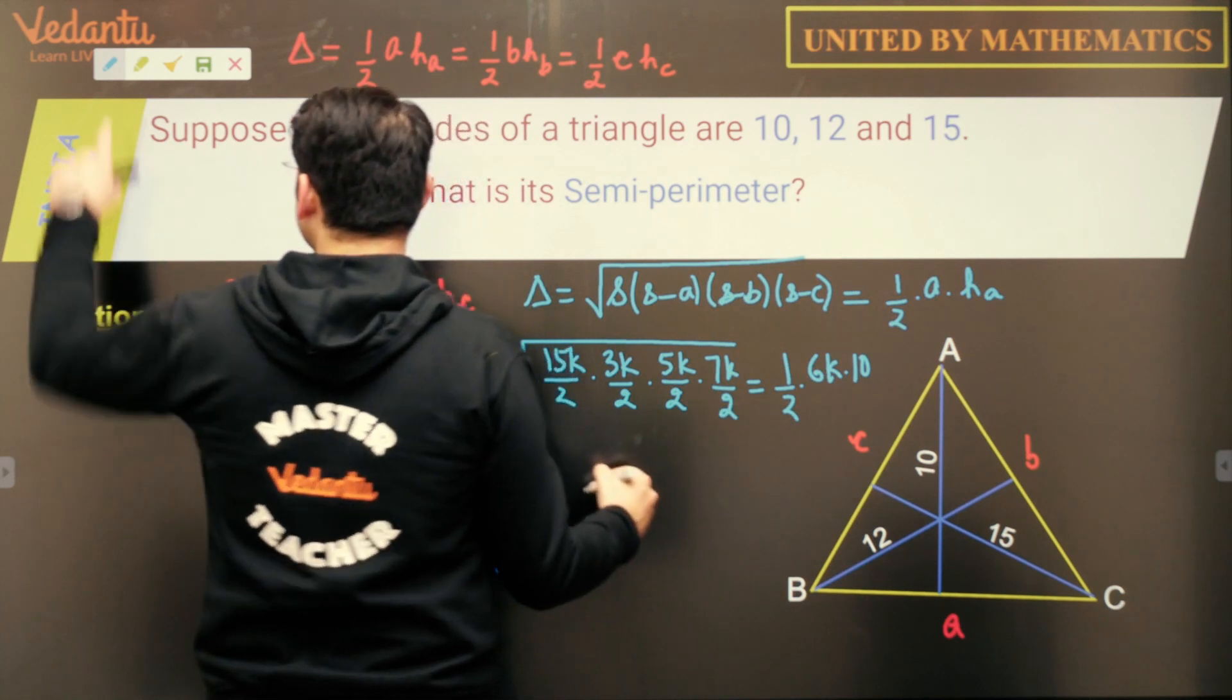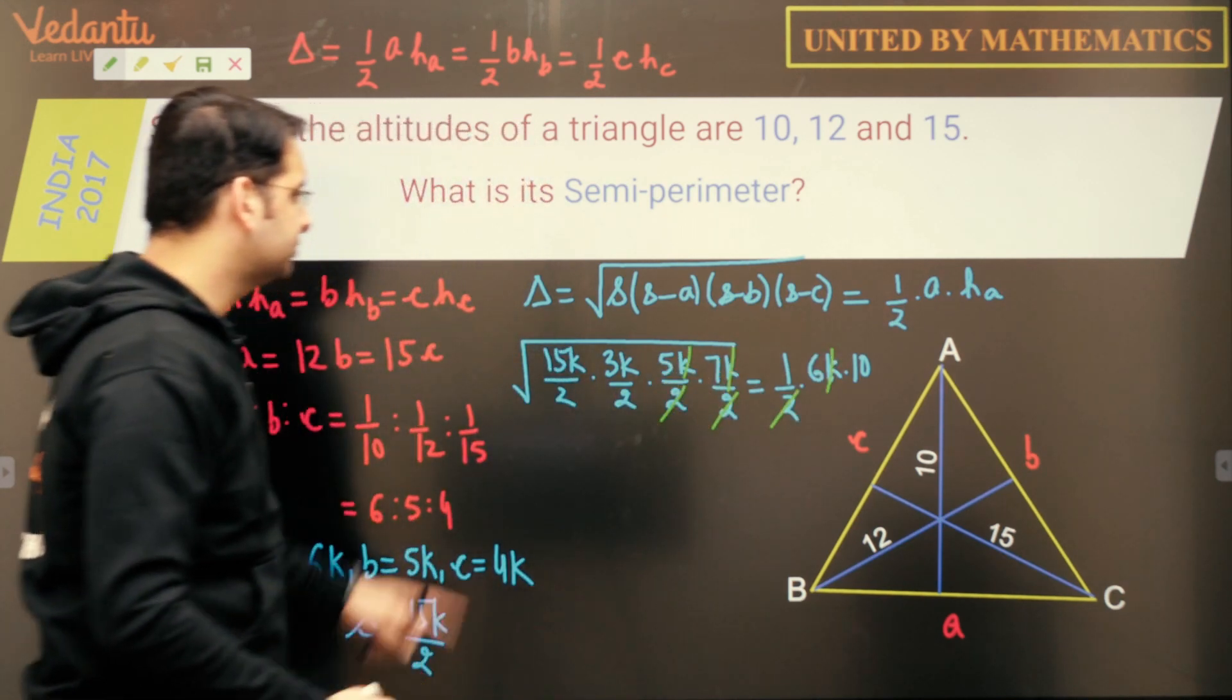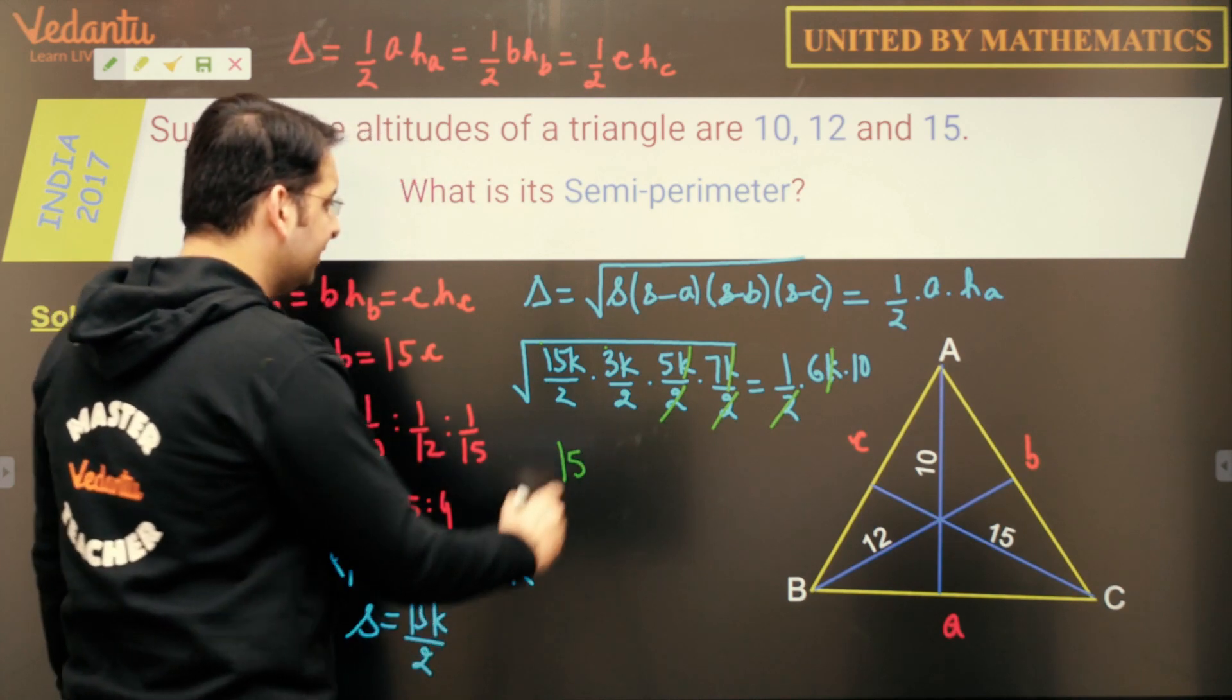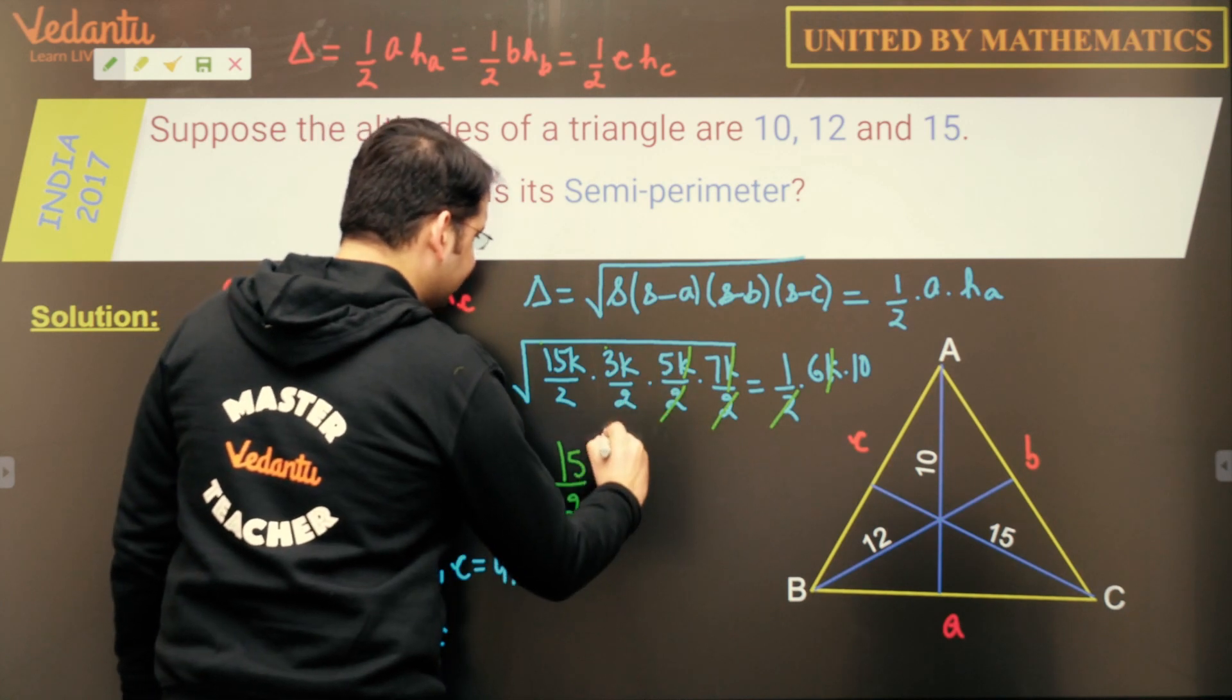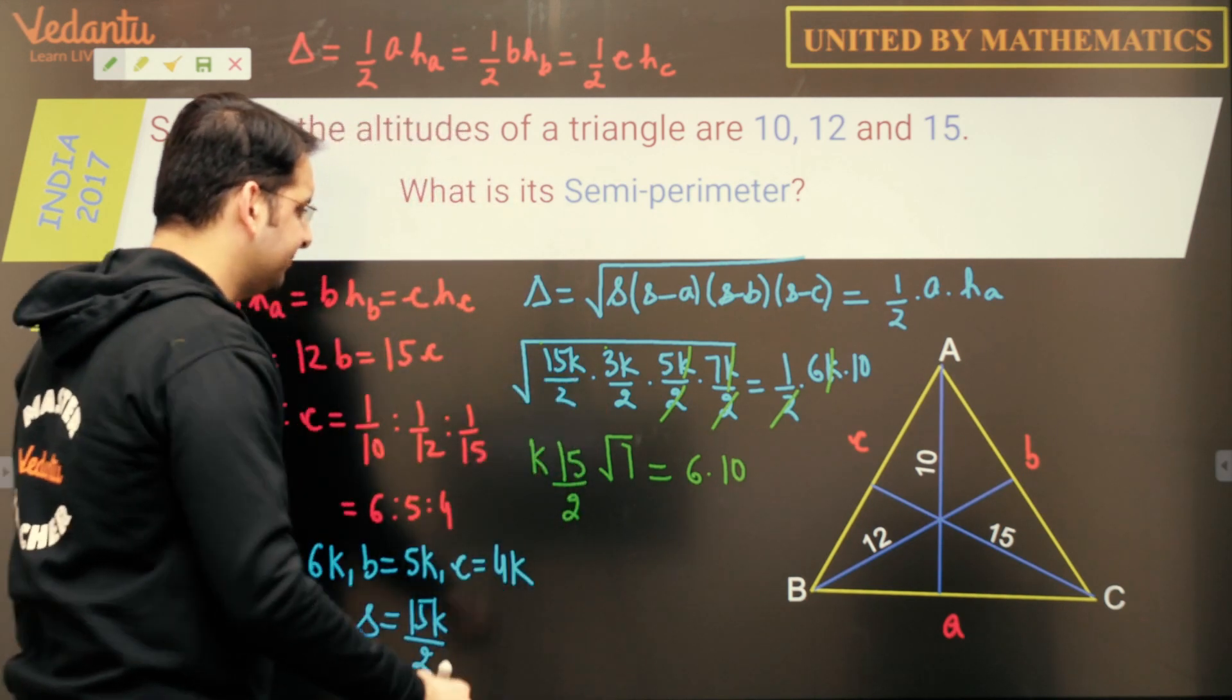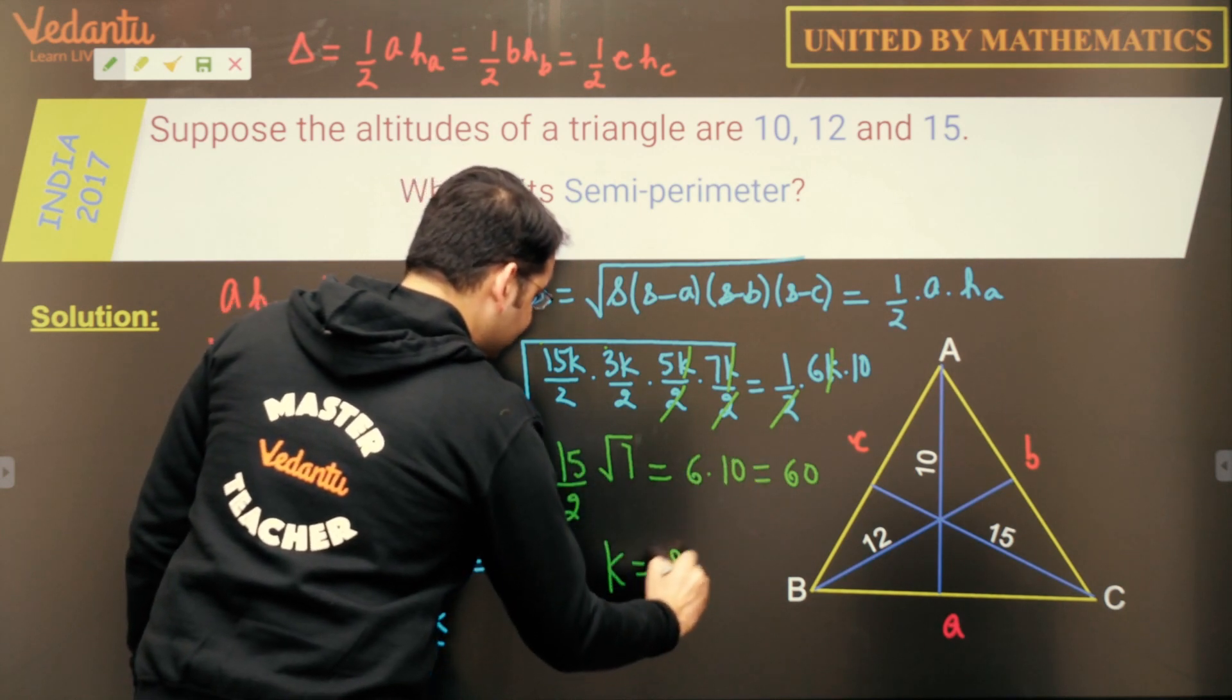So let us try to find the value of K. Let us try to cancel things out. So 2 gets cancelled out by these two. 1K gets cancelled out by K square is in the square root. So we have 15 here and 3 into 5 is 15 again. So 15 can be taken out of the square root and 2 and 2, so 2 will also get out. Into root of 7 is 6 into 10. And 1K will be left from K square. So 15 into this is 60. So K will be 8 by root 7.